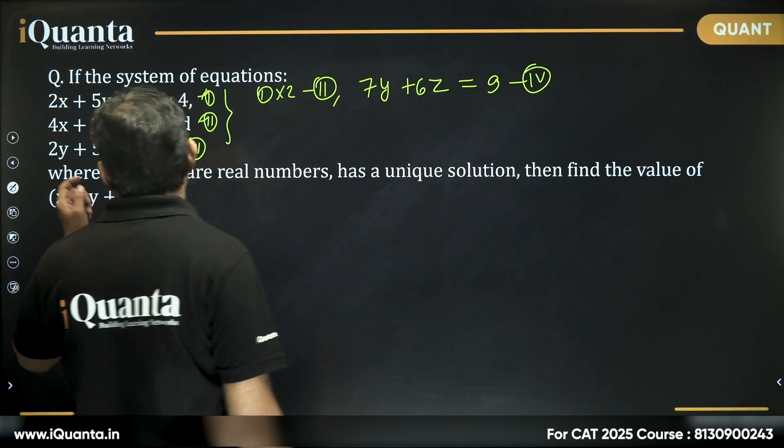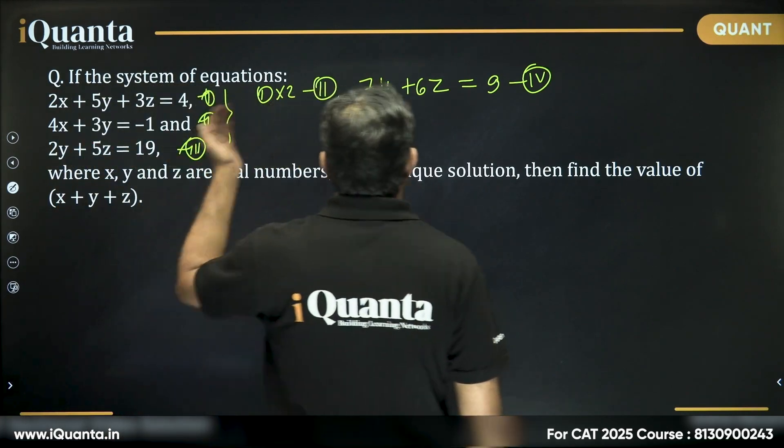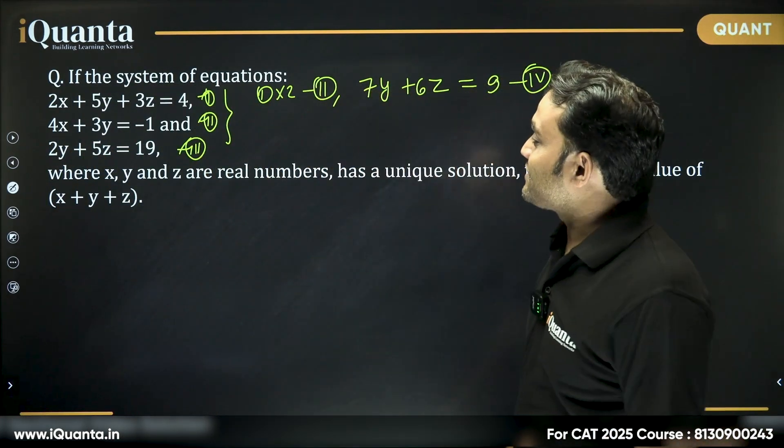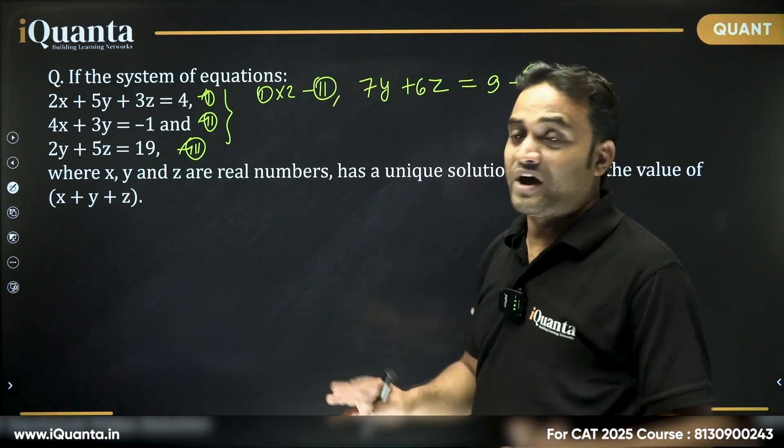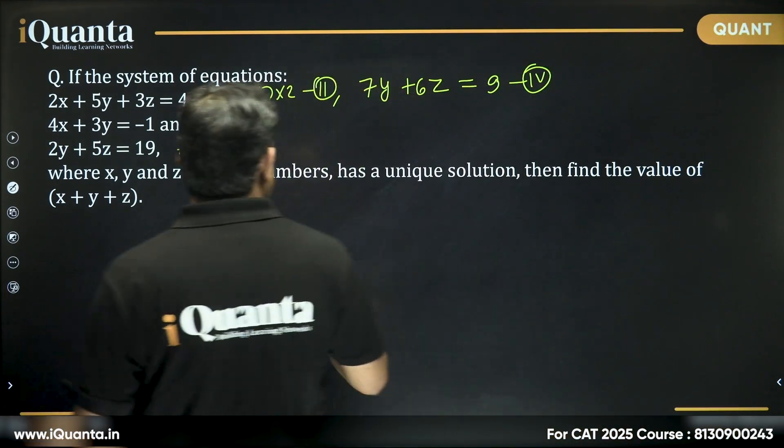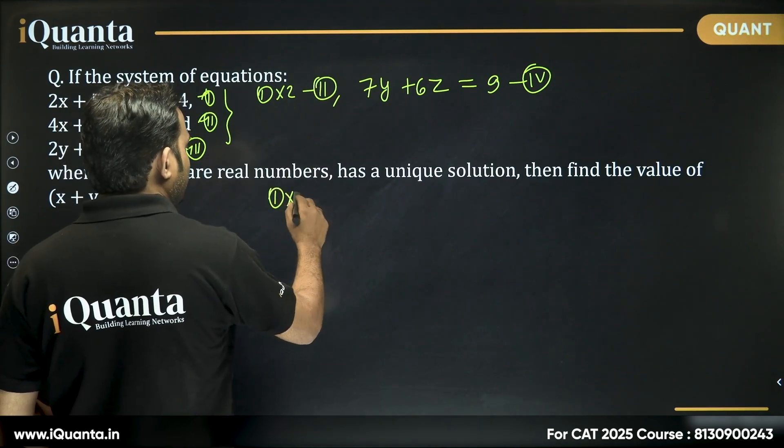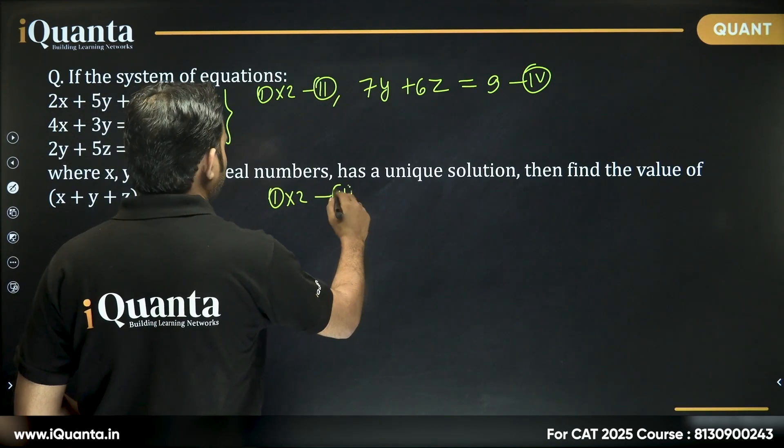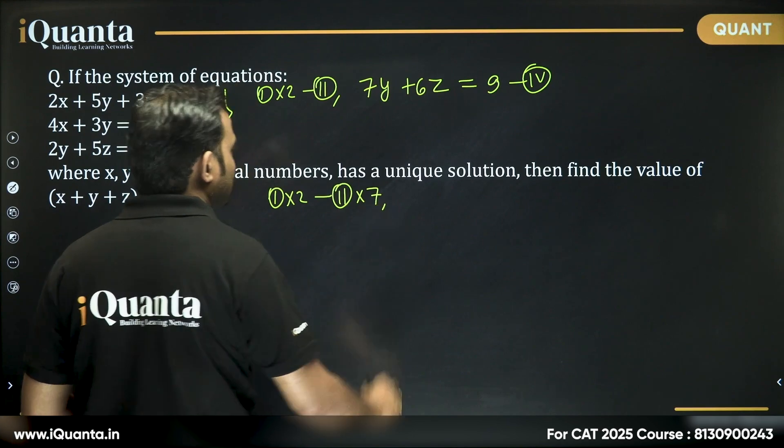Now we have equation 3 and we have this equation. We can try again eliminating one of the variables, y or z. If I multiply equation 4 by 2 and then subtract equation 3 by 7, what do we get?